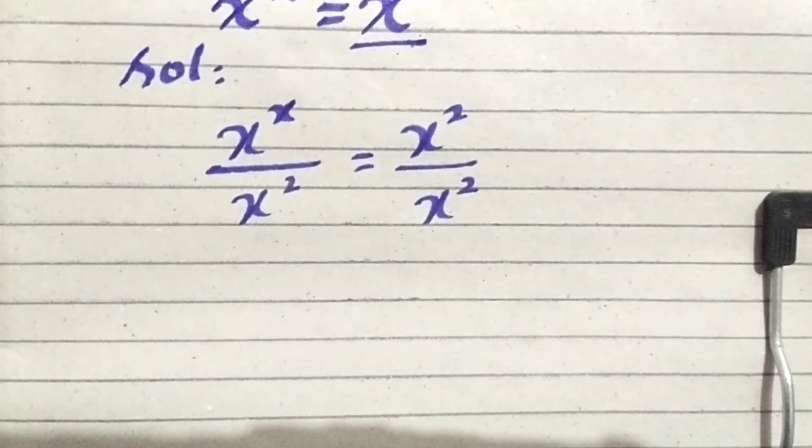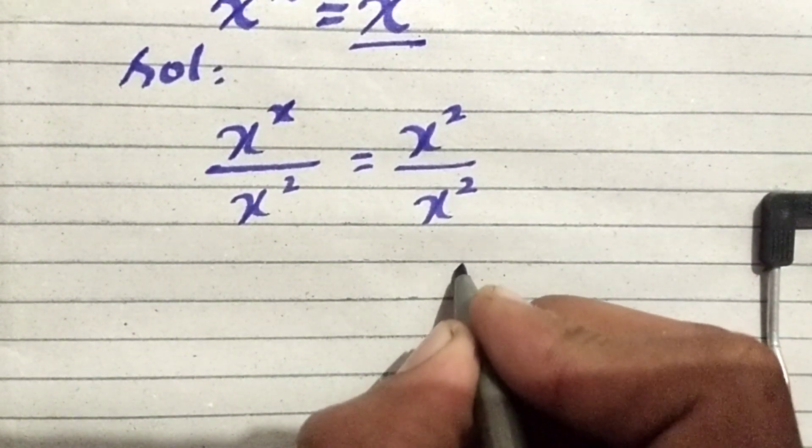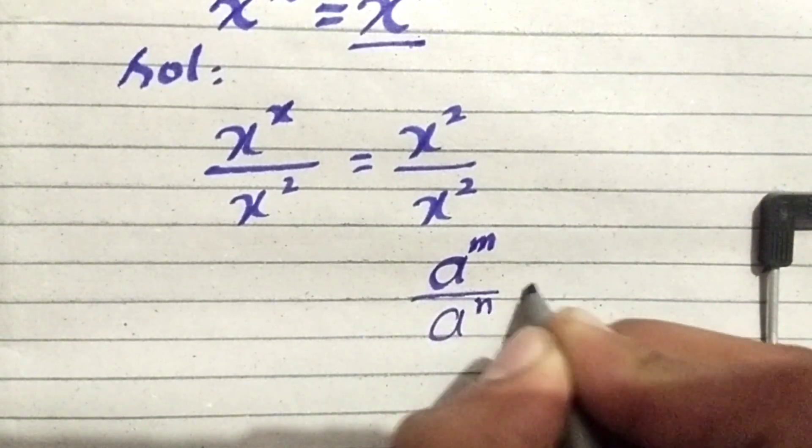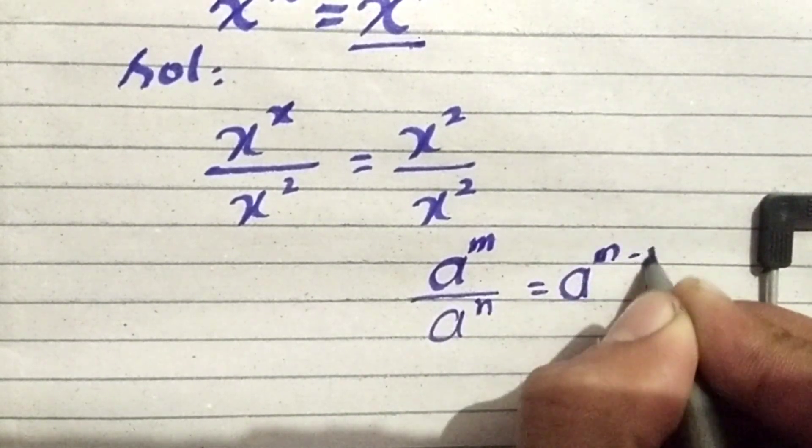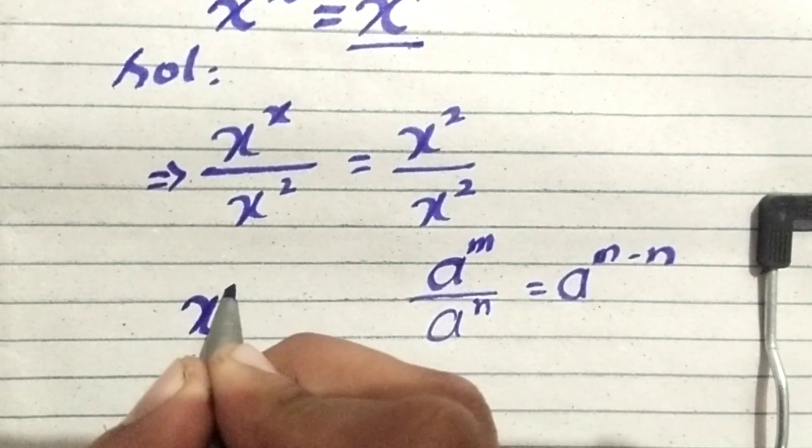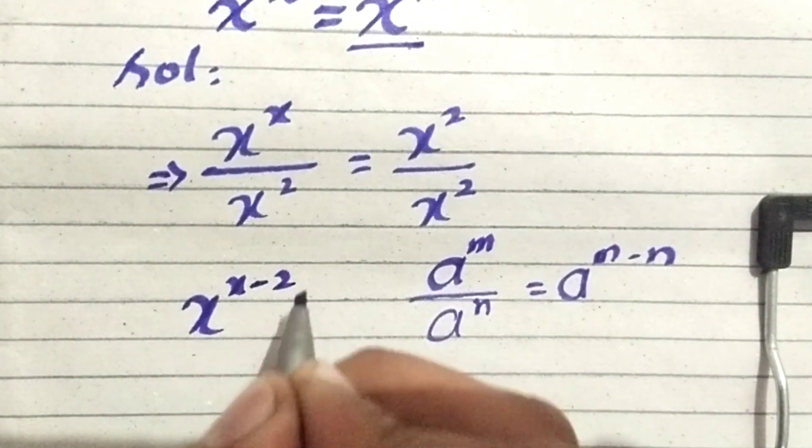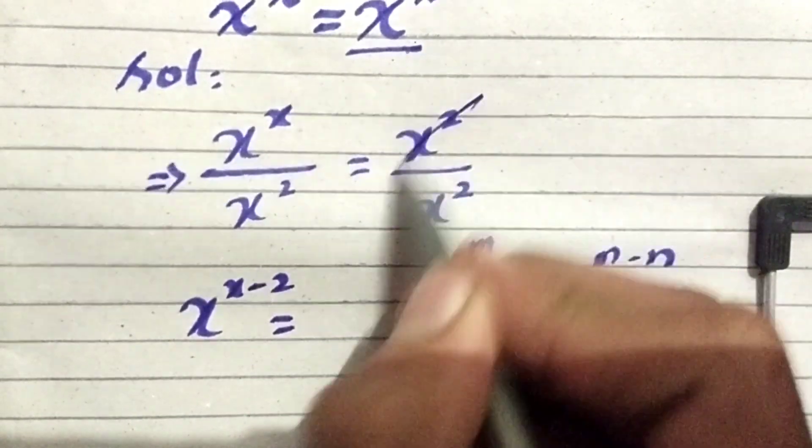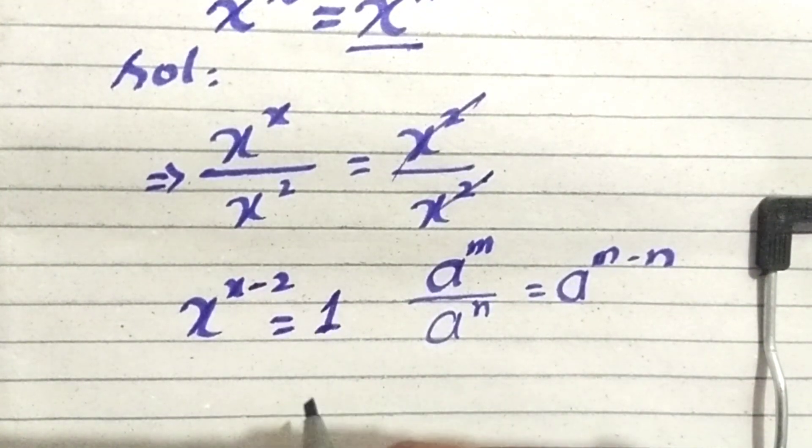We have the exponential law that a power m divided by a power n is equal to a power m minus n. Applying this law here, this becomes x power x minus 2 is equal to, the denominator and denominator get cancelled, so it becomes 1.